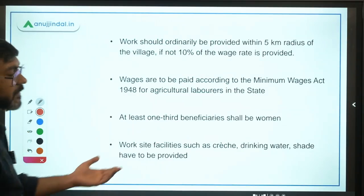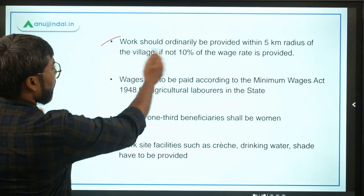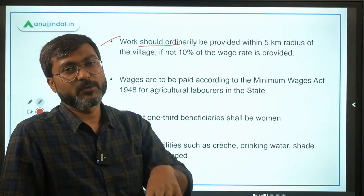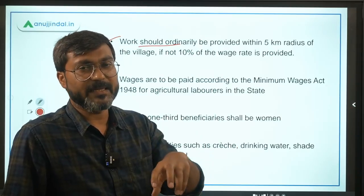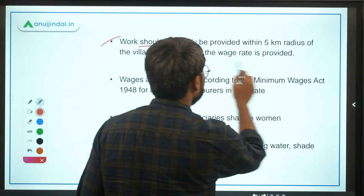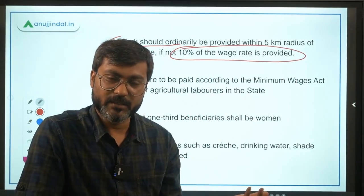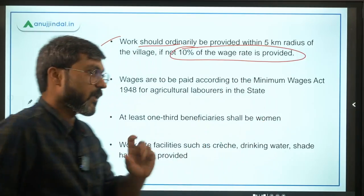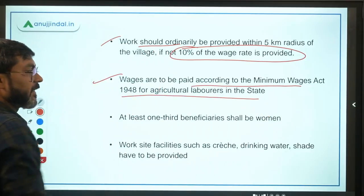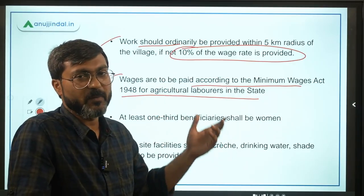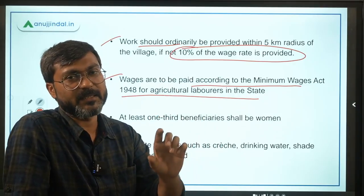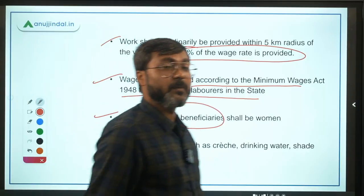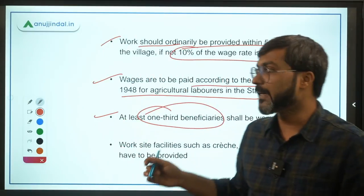Work should ordinarily be provided within a five kilometer radius of the applicant's residence. If work is provided beyond five kilometers, then 10% of the wage rate is additionally provided as traveling allowance. Wages are to be paid according to the Minimum Wages Act for that state's agricultural labour. At least one-third — that is 33% — of the beneficiaries shall be women. That is a very important point.